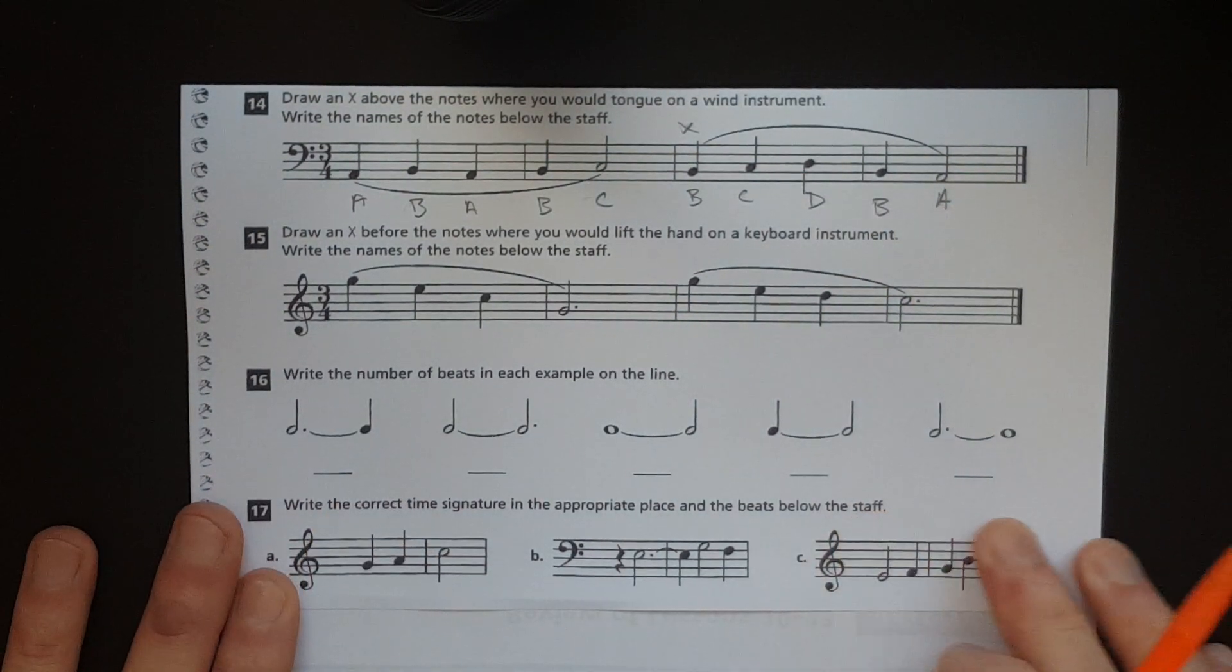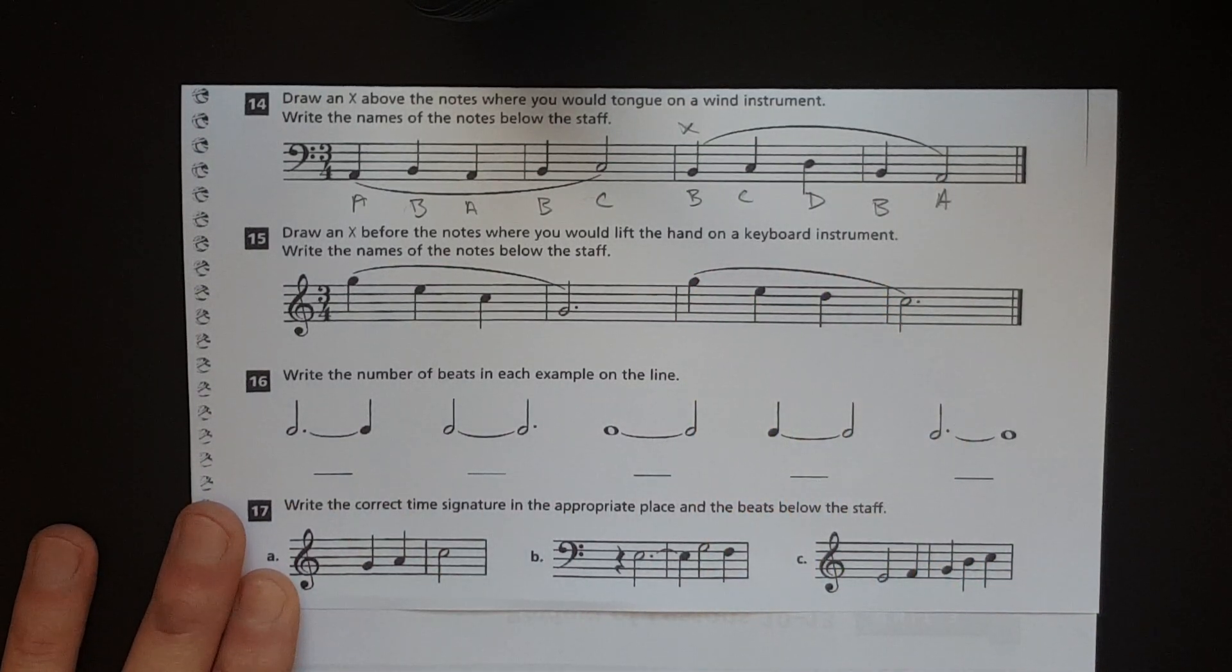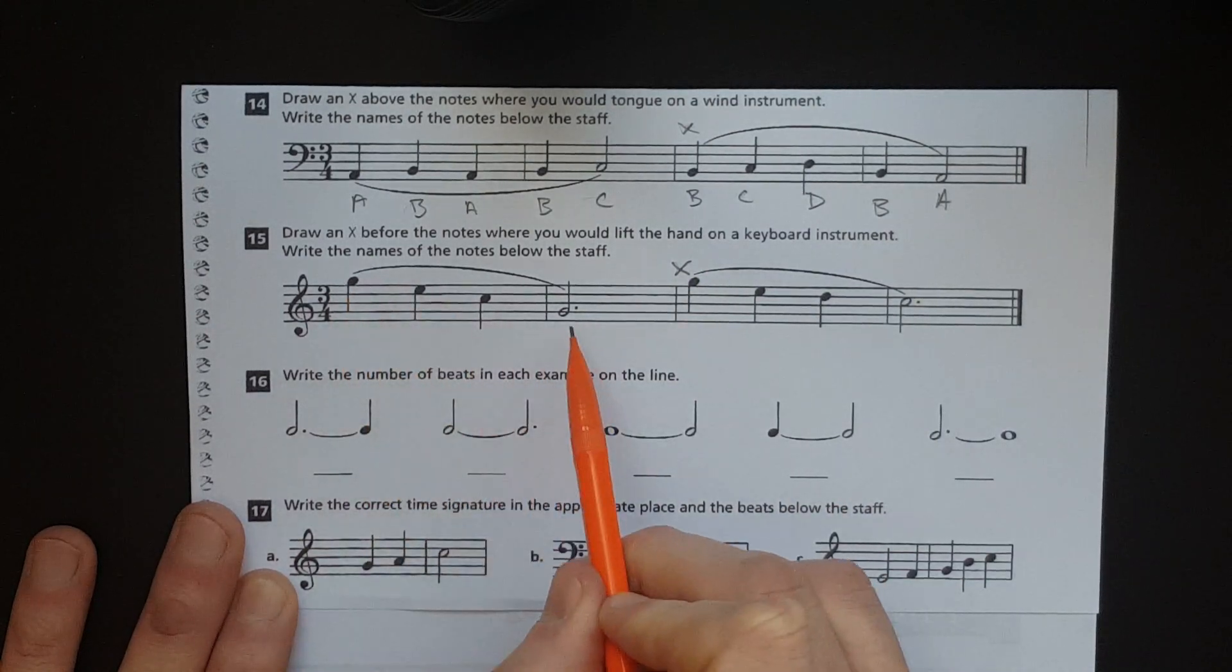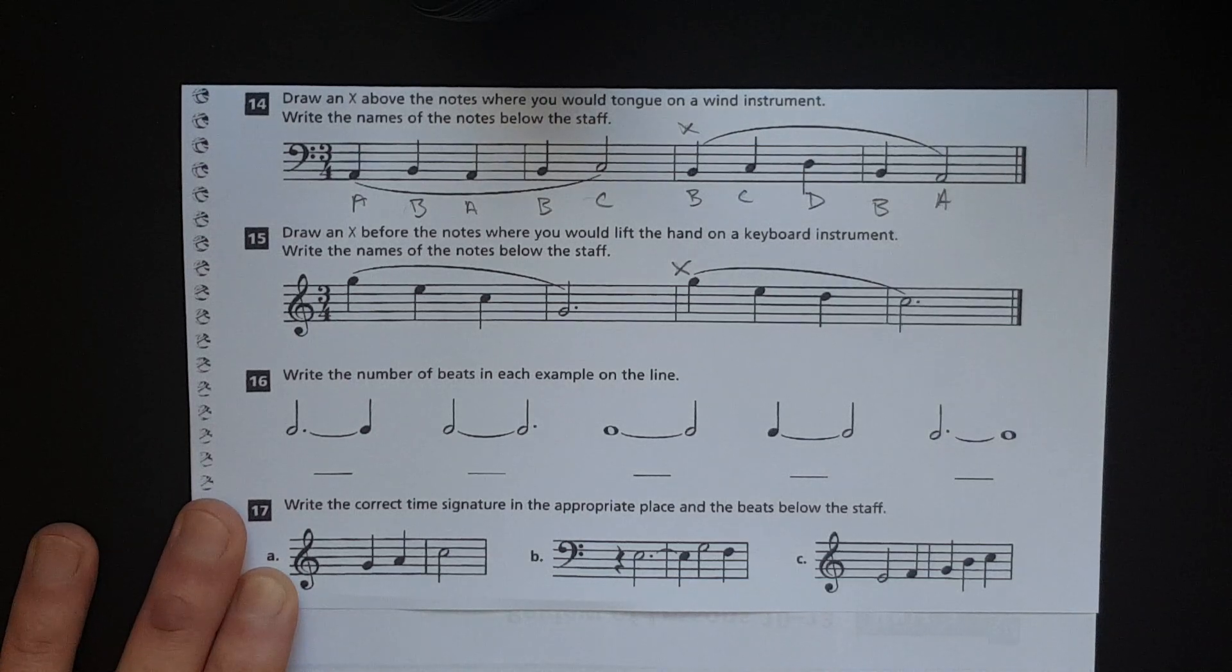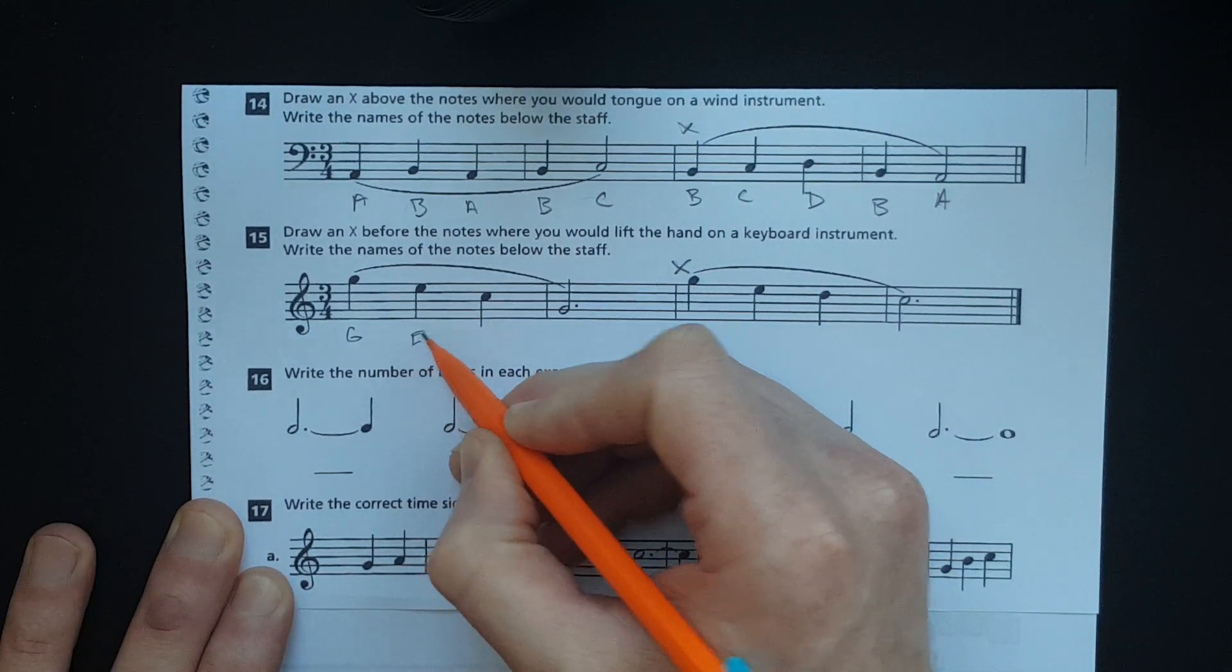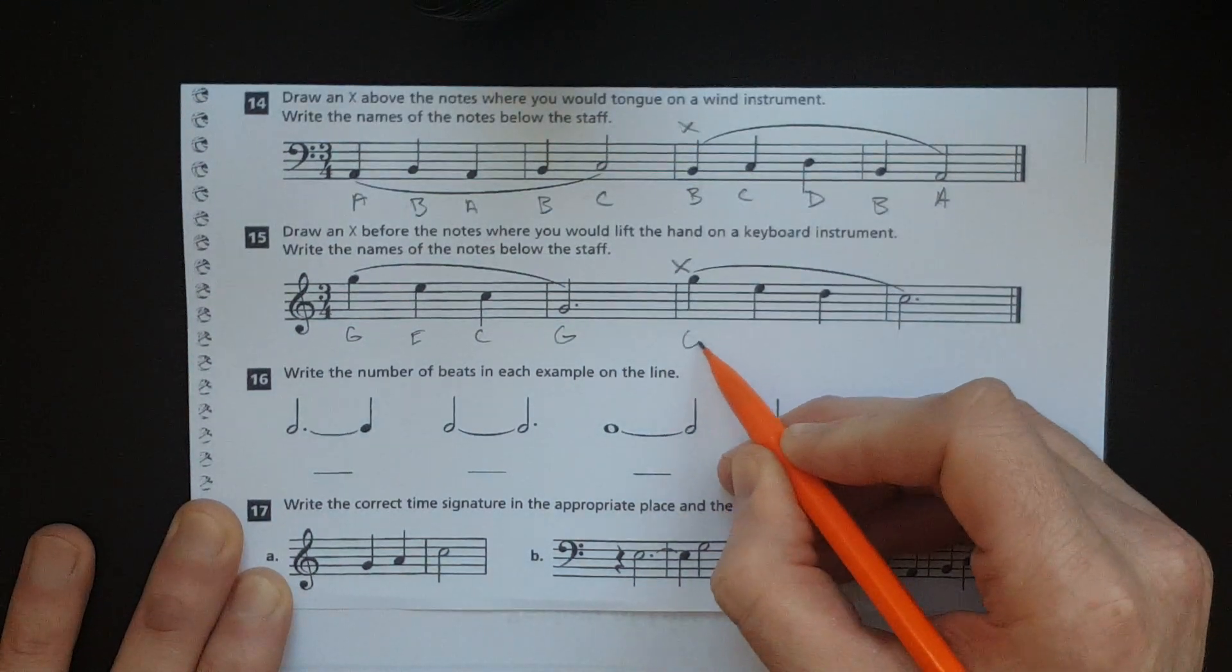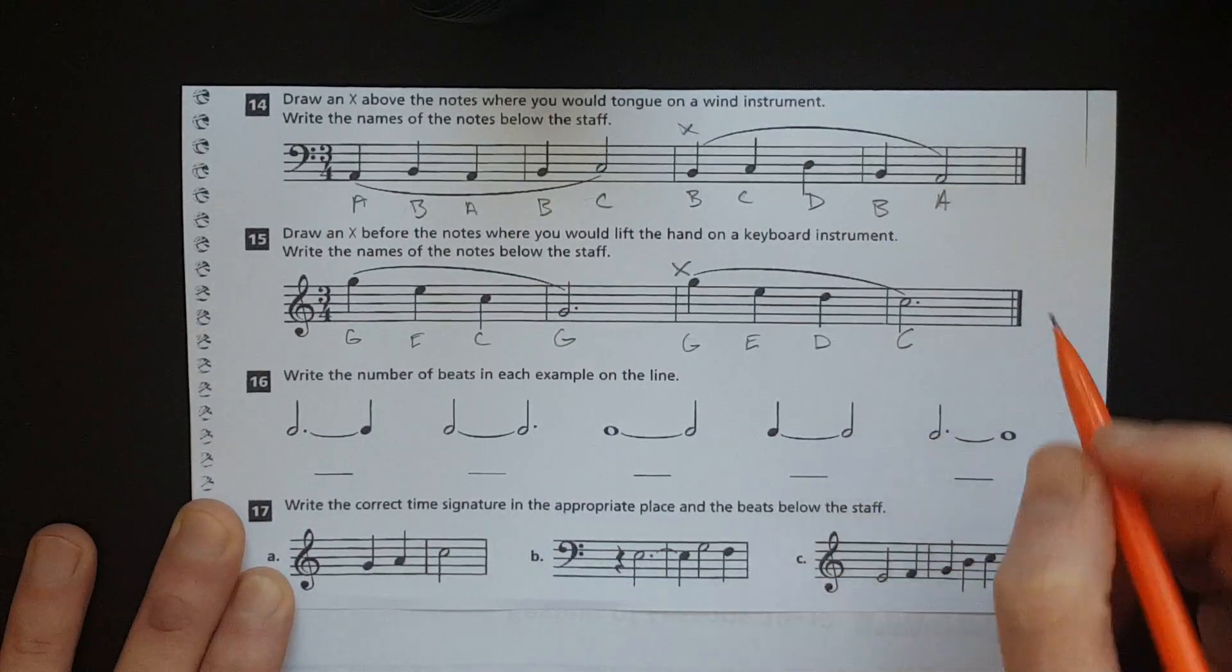There we go. Alright. Number 15. Draw an X before the notes where you would lift the hand on a keyboard instrument. Write the names of the notes below the staff. Alright. So, again, this is the same as a breath or a bow. So, that slur indicates that that's all legato and same with that slur there. And that's where you would lift your hand on piano. So, we're back in treble clef. G, E, C, G. And then G, E, D, C.